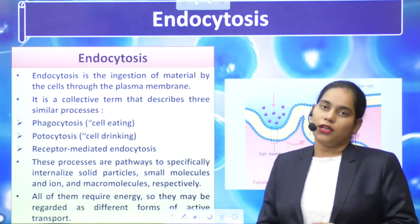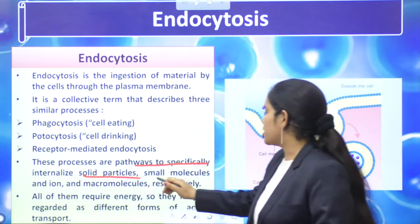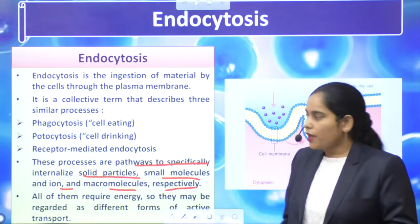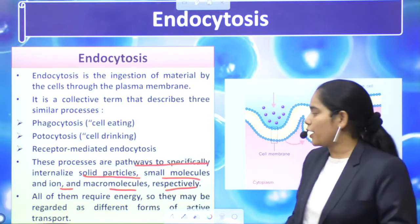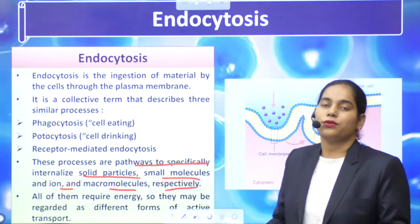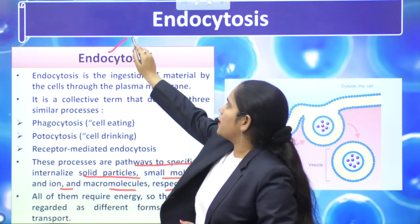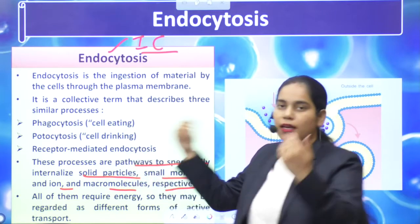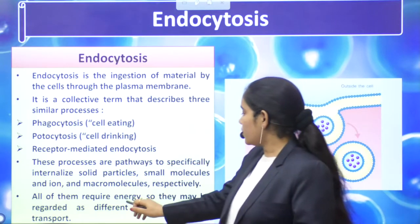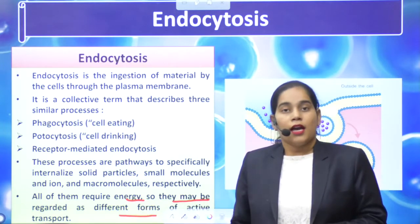These are some processes that the cells follow. These processes are the pathway of specifically internalized solid particles, small molecules, ions, and macromolecules respectively. All of them require energy, so they may be regarded as different forms of active transport.